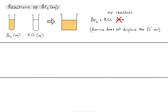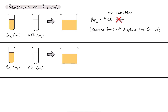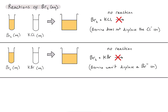What about bromine and potassium bromide? Again there's no visible change, and thinking about it carefully, I've got bromine and bromide — they both come from the same element, so they are not going to displace each other. So again we've got no reaction and can't write a reaction equation.